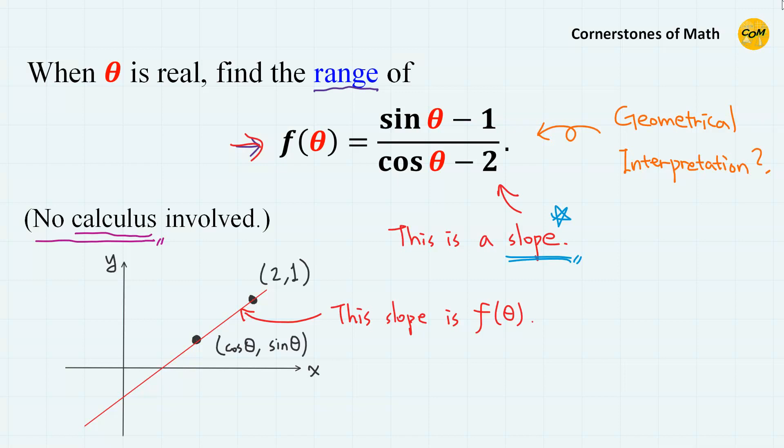That is, f theta is the slope of the line connecting points cosine theta comma sine theta and 2 comma 1.